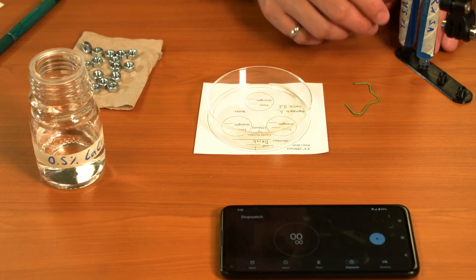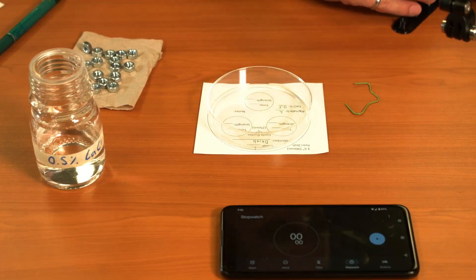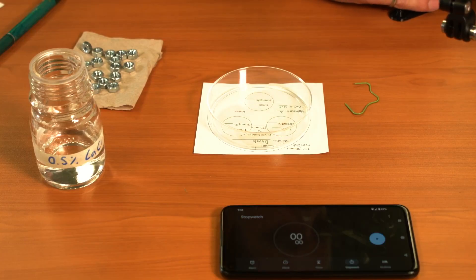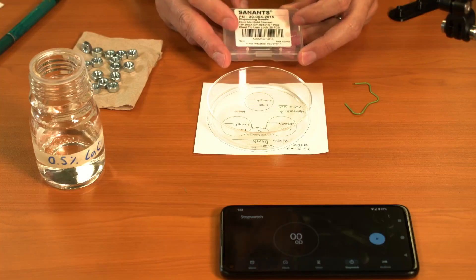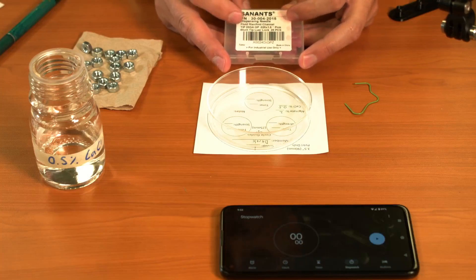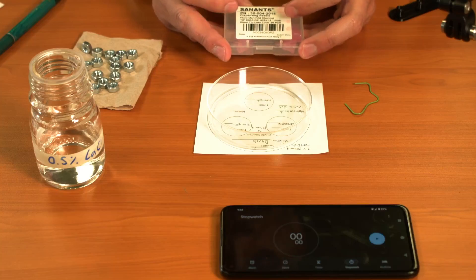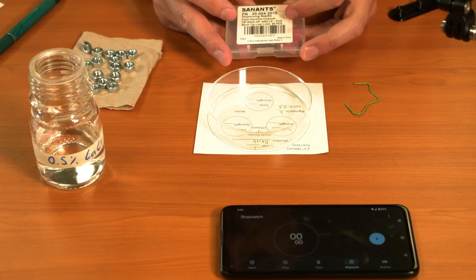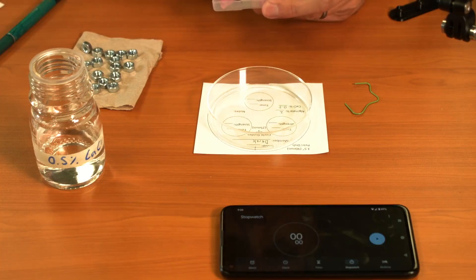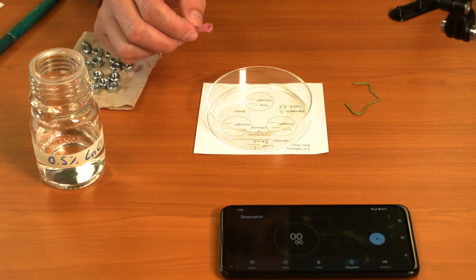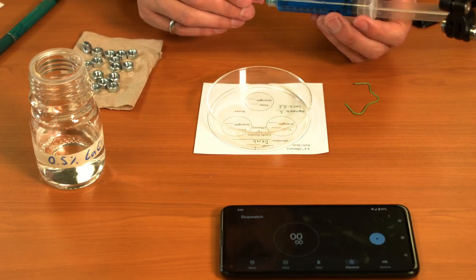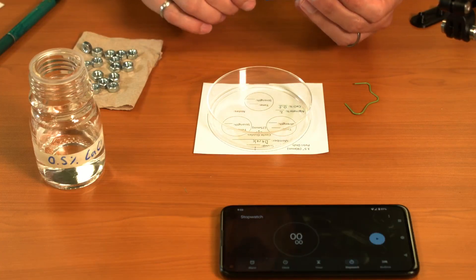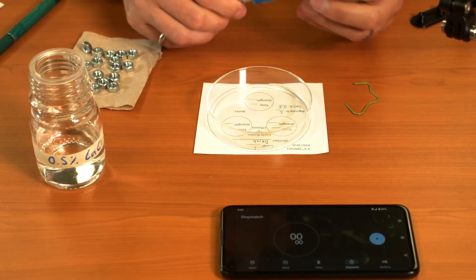I'm going to take my sodium alginate and put a dispensing tip. This is like a needle, except it doesn't have a point. It's got a blunt point needle. This one is a 20 gauge needle, and it has a lure lock on that so it will screw onto the end of my syringe.